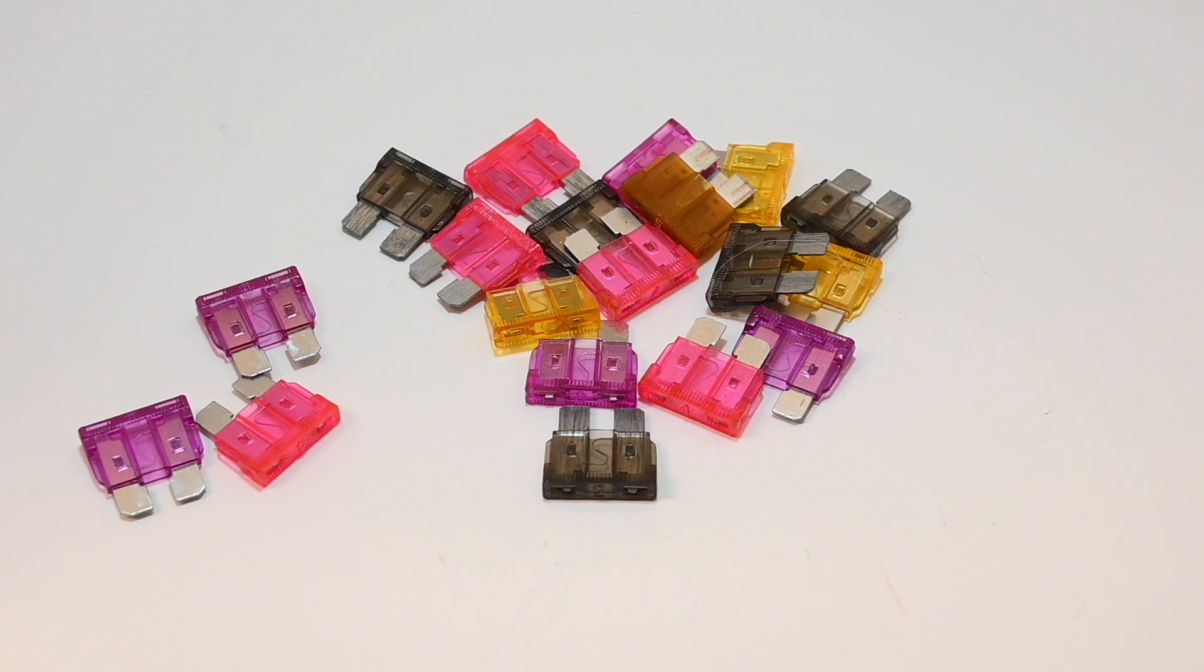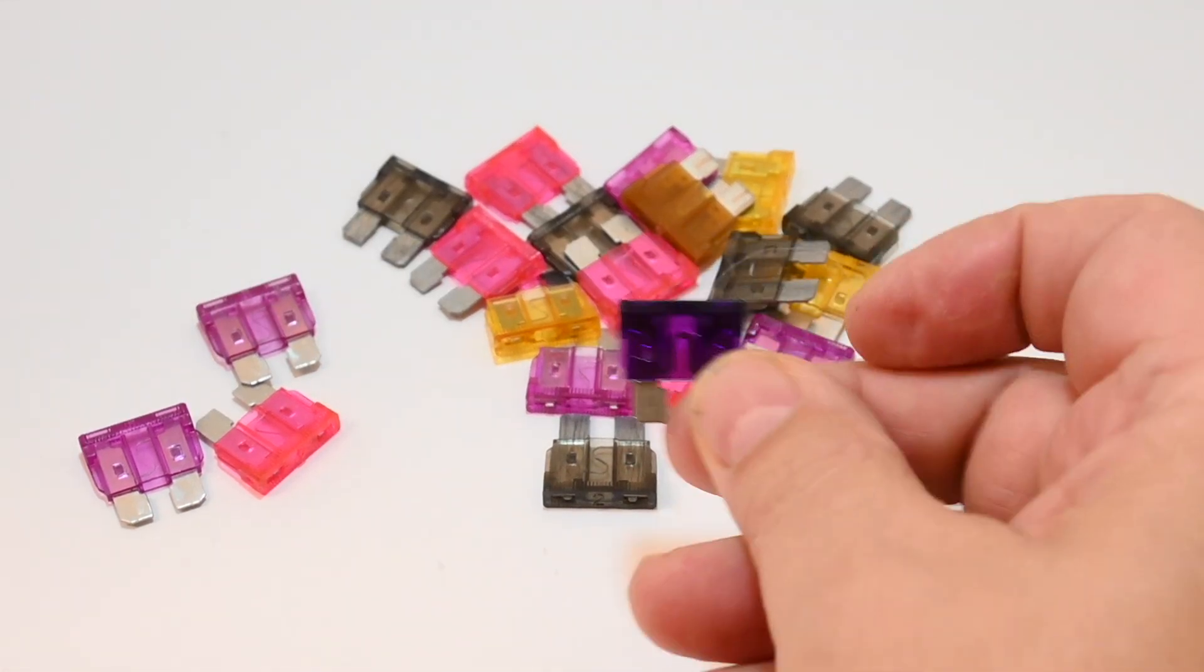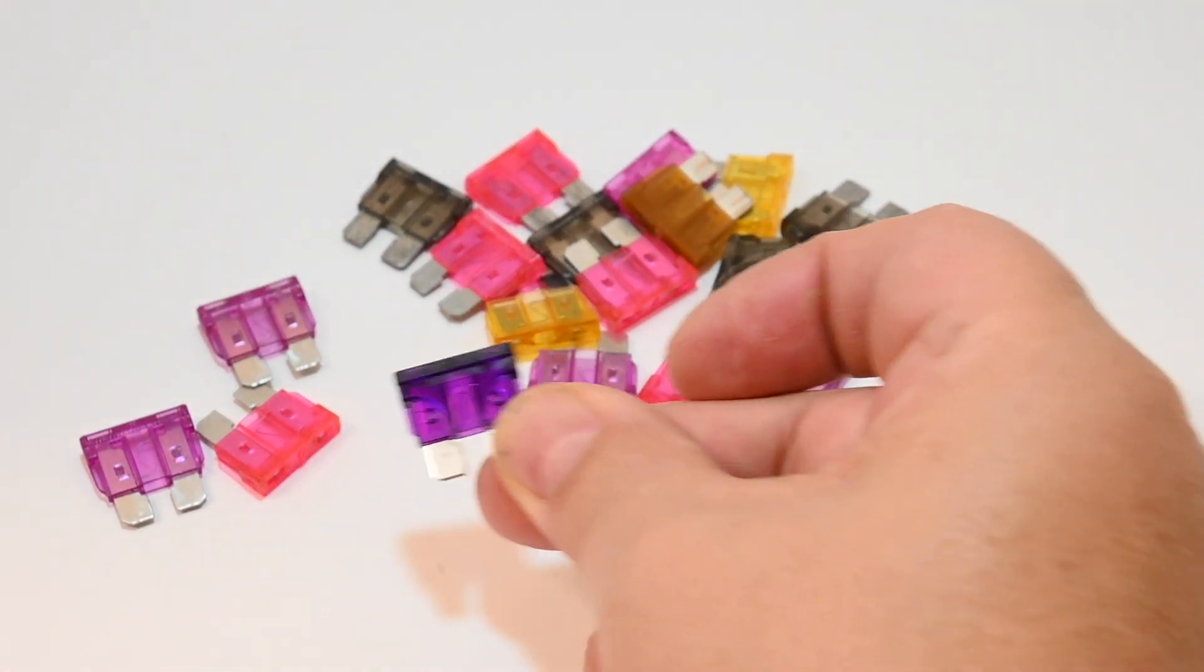And the automotive ATO-ATC type fuses generally have a color code that designates what their current carrying capability is. And it is true probably 99 percent of the time, but not always. For example, here is a 35 amp ATO-ATC fuse, and it is violet.